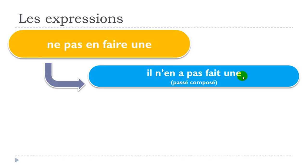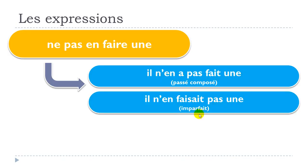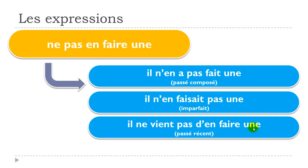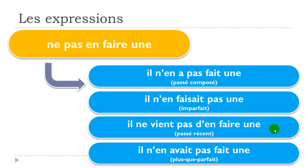Now let's see some past tenses. Passé composé: il n'en a pas fait une. Imparfait: il n'en faisait pas une. Passé récent: il ne vient pas d'en faire une. Plus-que-parfait: il n'en avait pas fait une.